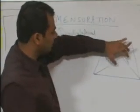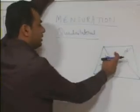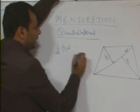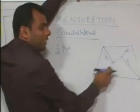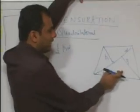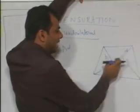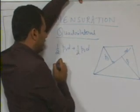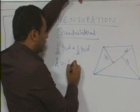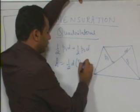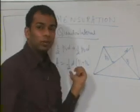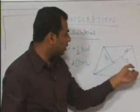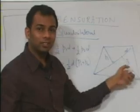The area of a quadrilateral is nothing but the area of two triangles. The area of the first triangle is half of P1 into D, and the area of the second triangle is half of P2 into D. So the total area equals half of D into (P1 plus P2), which means area equals half the product of one diagonal and the sum of the perpendiculars drawn from the two vertices onto that diagonal.